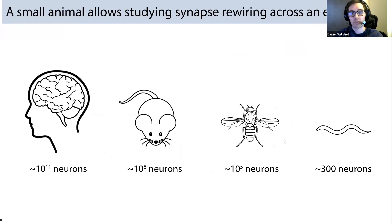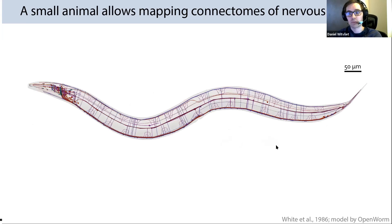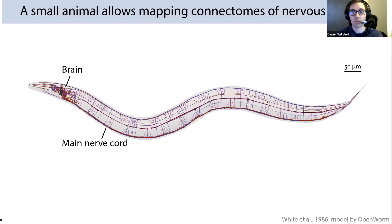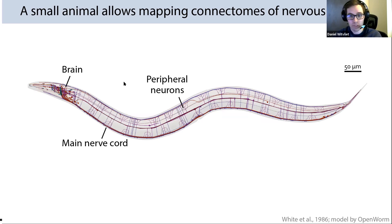To study the anatomy and function of all neurons throughout the entire brain, we turn to a much smaller animal — the nematode C. elegans — whose entire nervous system consists of only about 300 neurons. Even though their nervous system is small, it's organized similarly to larger animals: the worm has a brain where sensory information converges and decision-making happens, a main nerve cord controlling locomotion, and peripheral neurons collecting sensory information directed back into the brain. Because of its small size, we can map the entire nervous system at synapse resolution, getting a complete wiring diagram or connectome.